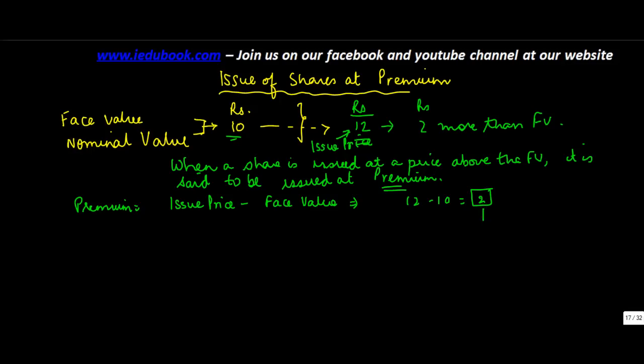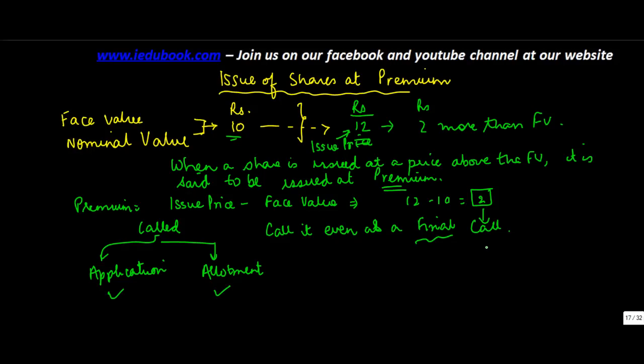Now you can call this premium at any time. Normally this is called either at the stage of application or allotment. Legally there is no bar, you can call it even as a final call. So there is no legal bar but normally it is called at application or allotment stage.